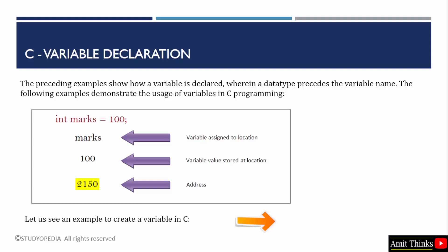These addresses are useful in various programming scenarios such as pointer manipulation, dynamic memory allocation, and function arguments. We will see these things in the upcoming lessons. Let us see an example to create a variable on VS Code.